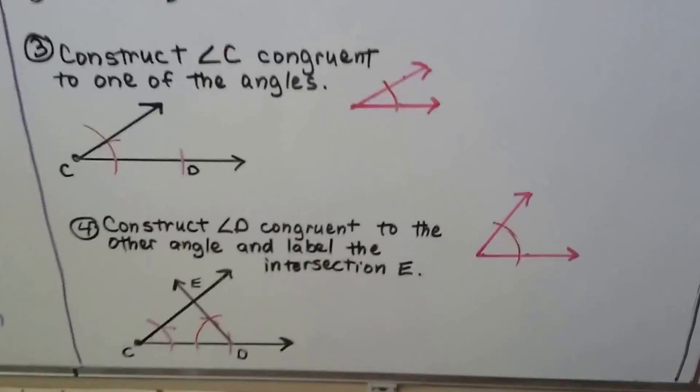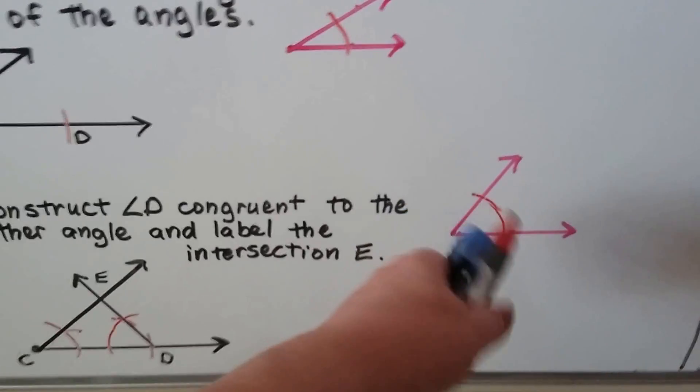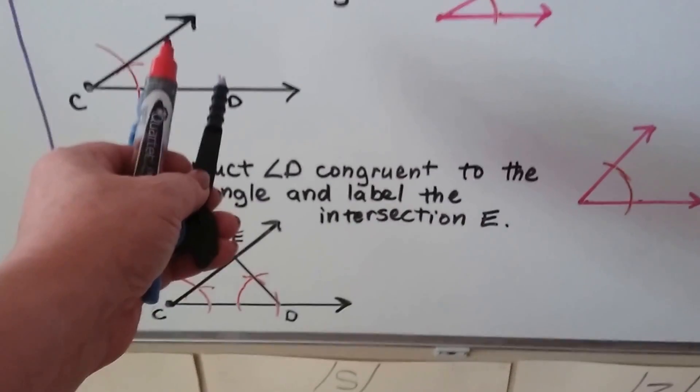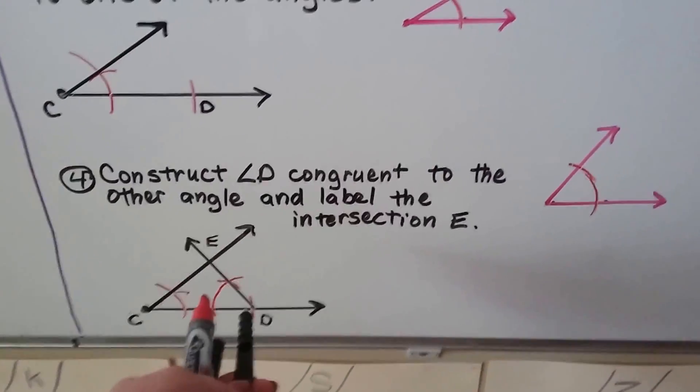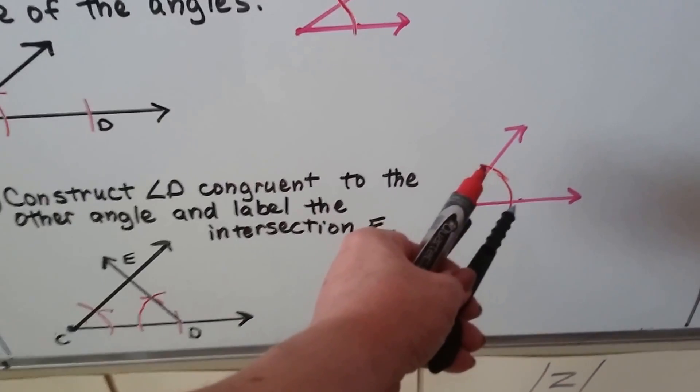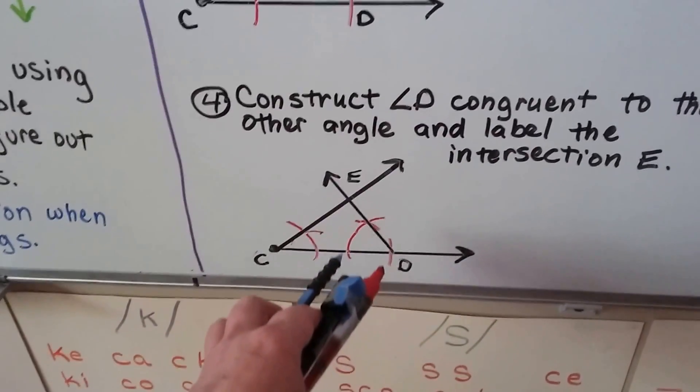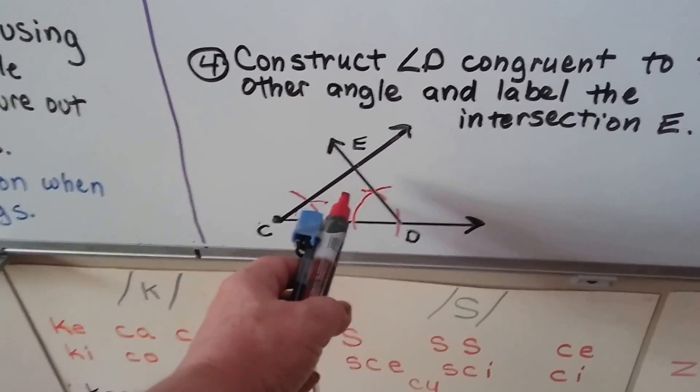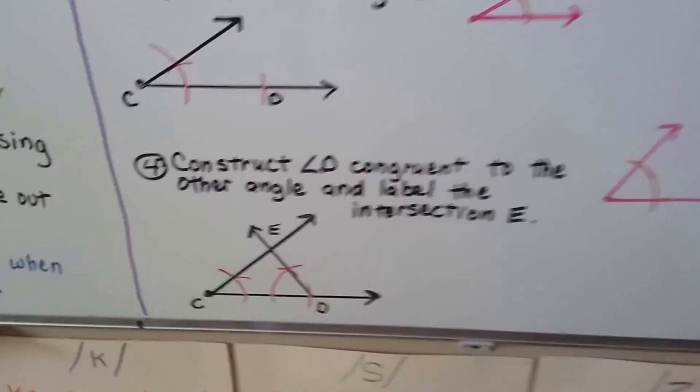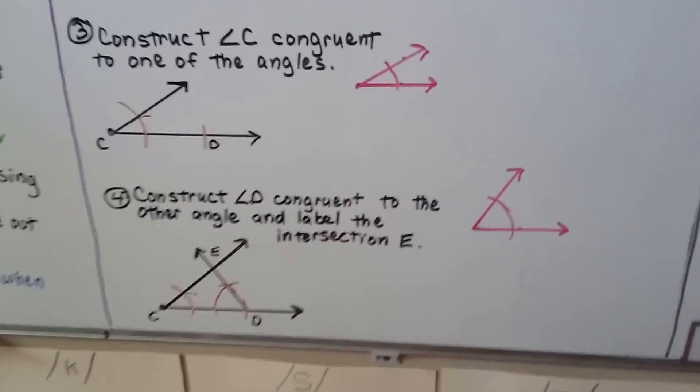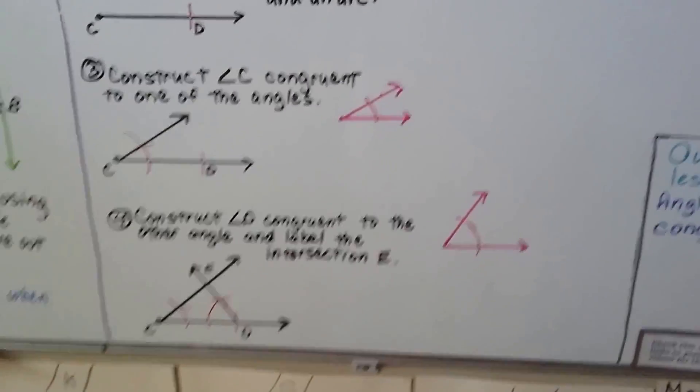Now we need to make this angle. We do the exact same thing. We take our compass and make an arc on the original, then go to D and make that arc. Then we measure between those two intersections and make a little arc at this intersection. Then from D through that intersection we make our ray and label that E. And now we've constructed a congruent triangle with angle-side-angle.